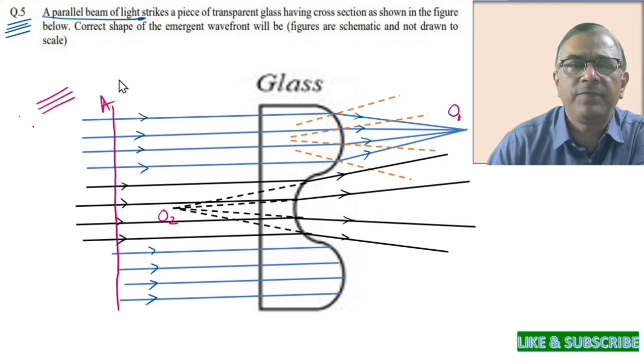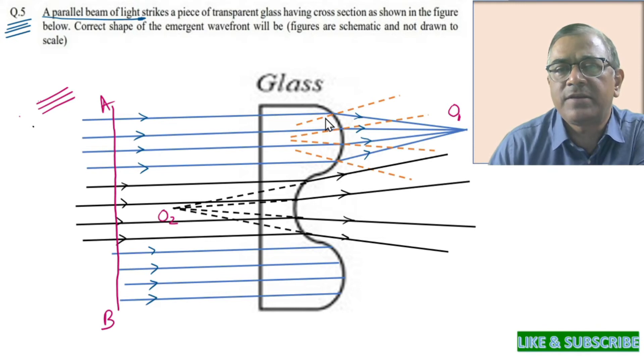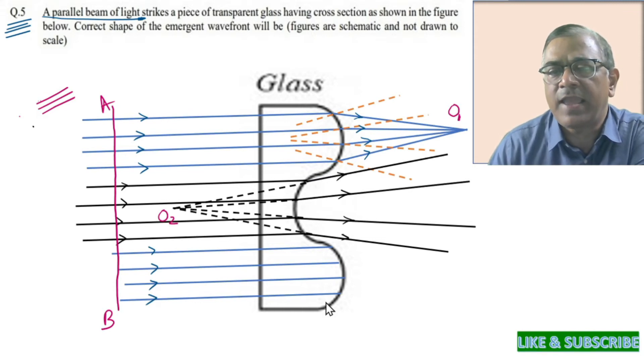AB happens to be the incident wavefront. Incident beam strikes the plain surface of the glass slab and hence refracted undeviated. This undeviated ray when falls upon the curved surface it is refracted again.